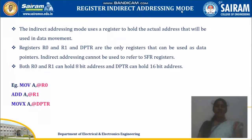In register indirect addressing mode, we are not going to mention the address directly in the instruction. Instead, we are going to mention the register that holds the actual address. When you use register indirect addressing mode, you are going to use only R0, R1, and data pointer. Apart from these, if you use registers like R2, R3, R4, it will become an invalid instruction.